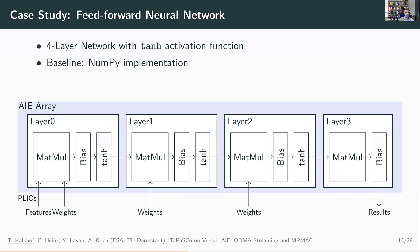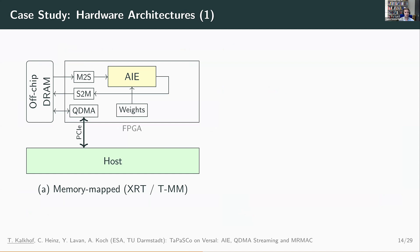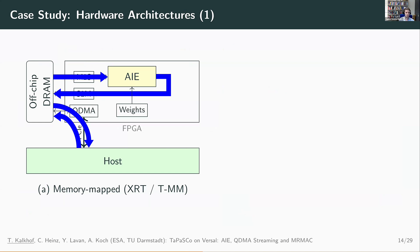In our publication, we did a case study on a simple feed-forward neural network: a four-layer network with a tanh activation function and a CPU baseline using a simple NumPy implementation. We had three different versions for evaluation. The first is the conventional memory-mapped way using XRT and Tapasco: we first move data from host to off-chip DRAM, then a PL kernel fetches data from DRAM, streams it into the AI engines, and the results are written back to off-chip DRAM and then moved to host memory by the DMA engine.